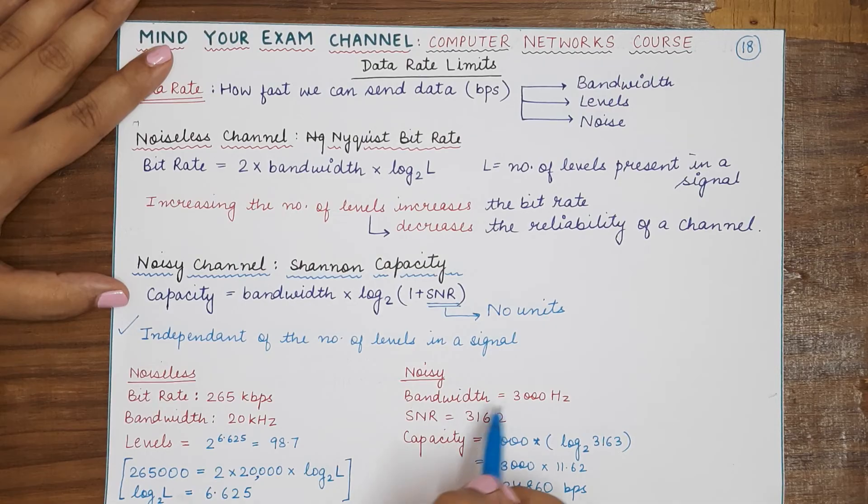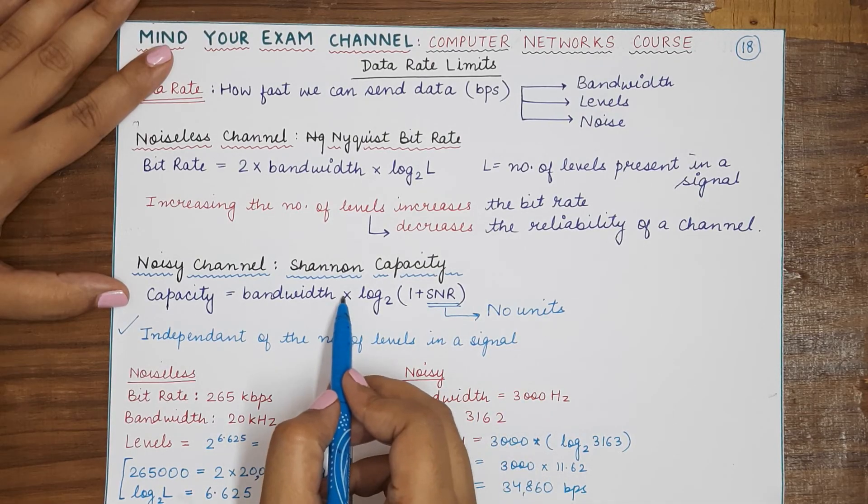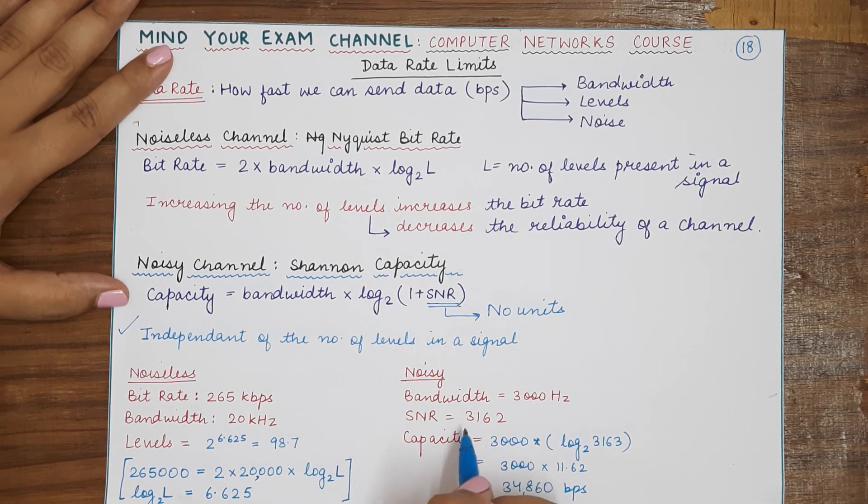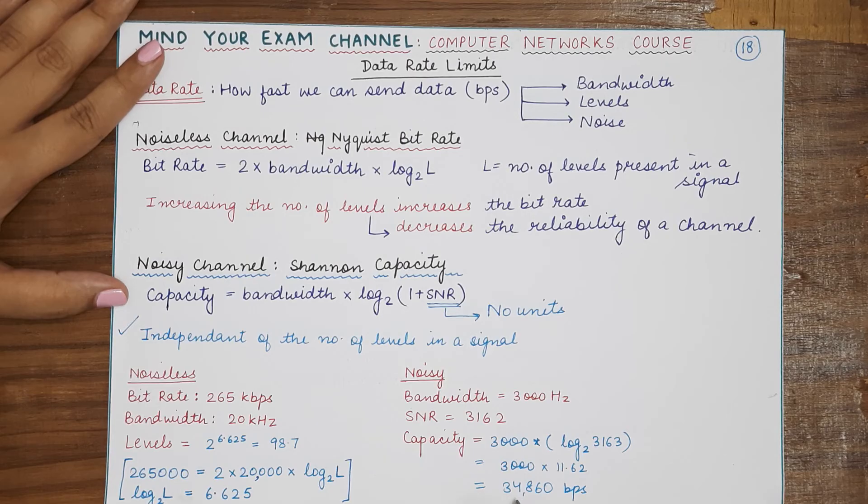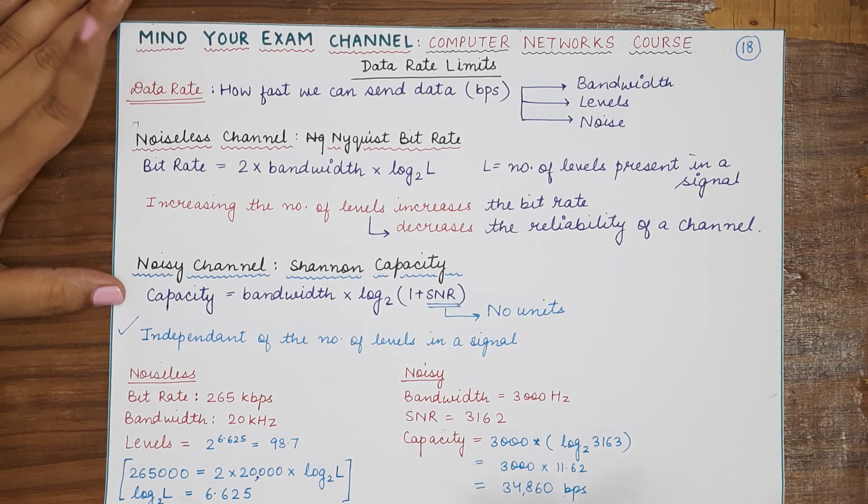Now capacity, this will be directly applicable: bandwidth, that means 3000 multiplied by log of (1 + 3162), so 3000 multiplied by log base 2 of 3163, and you will get the value of 34,860 bits per second. So please remember to put all the units when you write your final answer in your theory exam.